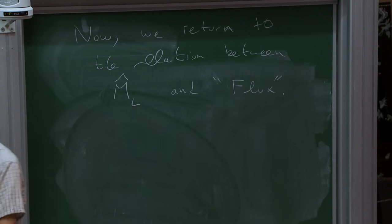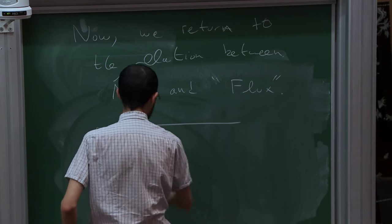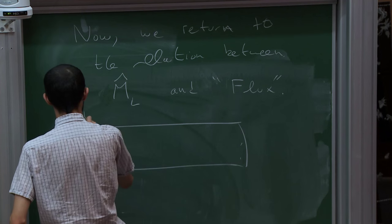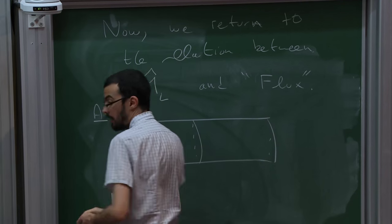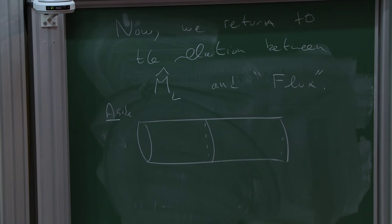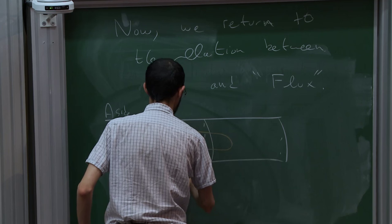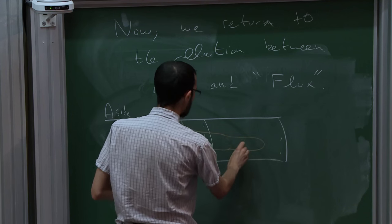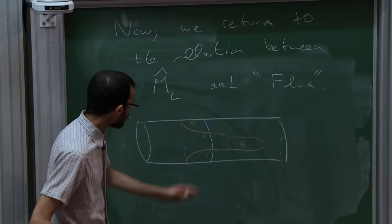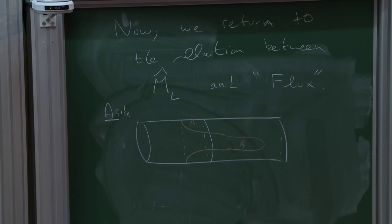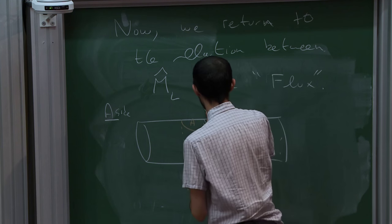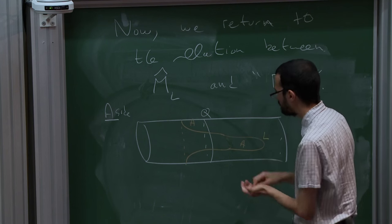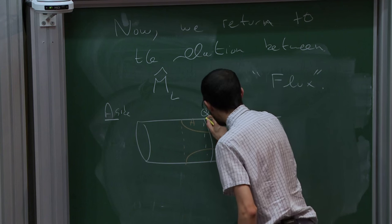My goal is to explain: in the usual Floer theory, if you compute the Floer cohomology between one Lagrangian and another, just as an aside — I take this Lagrangian here, and now I take some other Lagrangian. Let's say we've arranged things so that this area is A and this area is A. Then what we know is that the Floer cohomology is non-zero — we have a non-zero Floer cohomology group. But if I take Q and I move it by an infinitesimal amount.